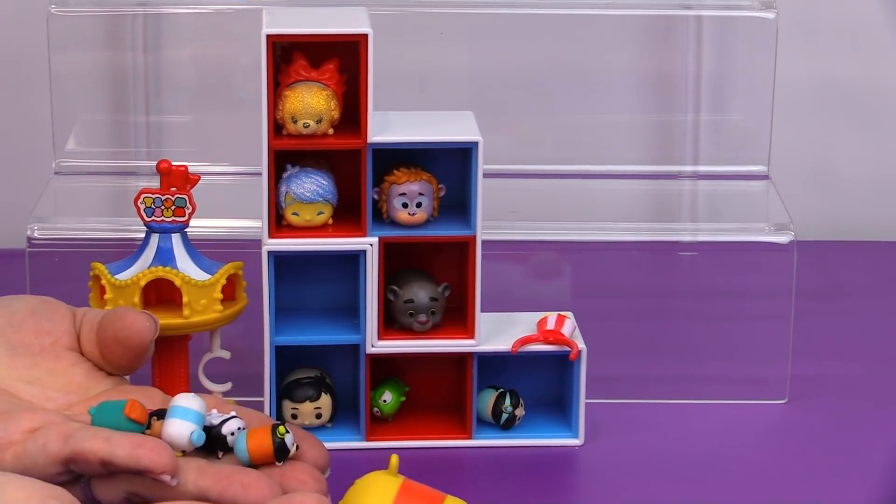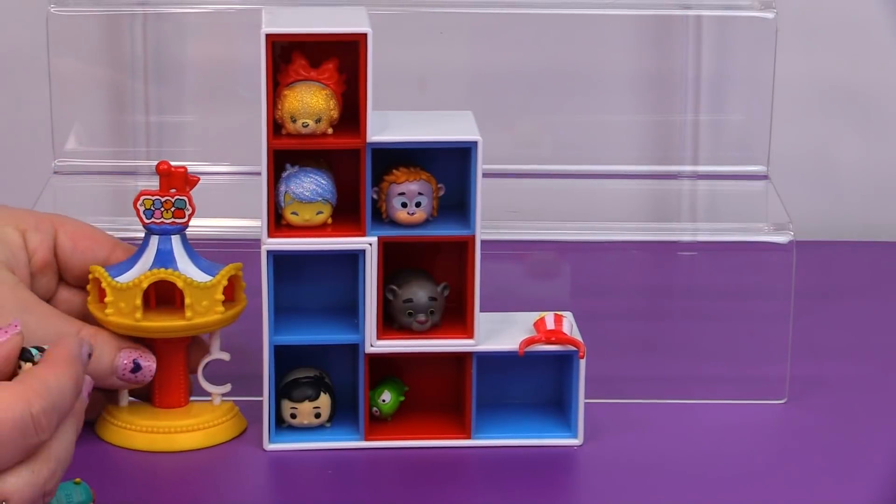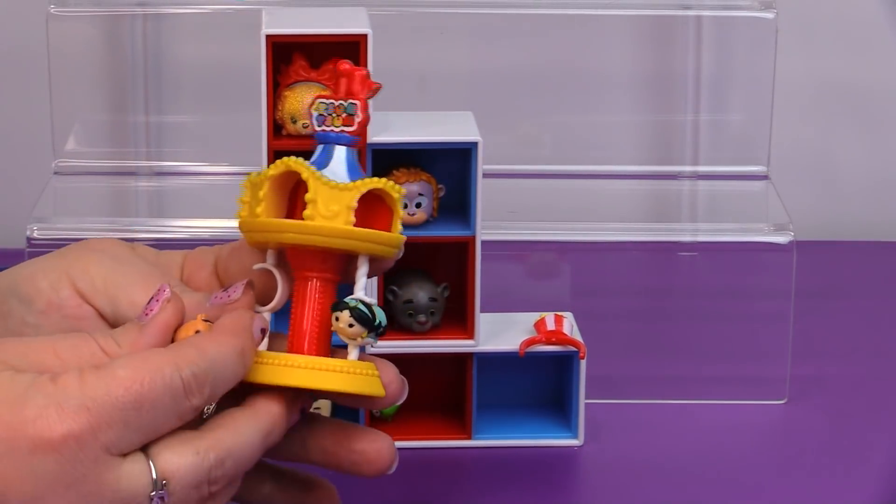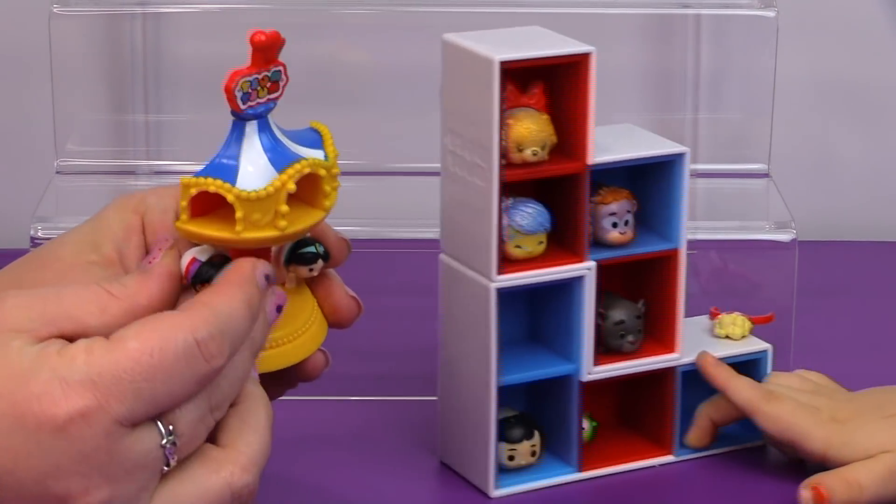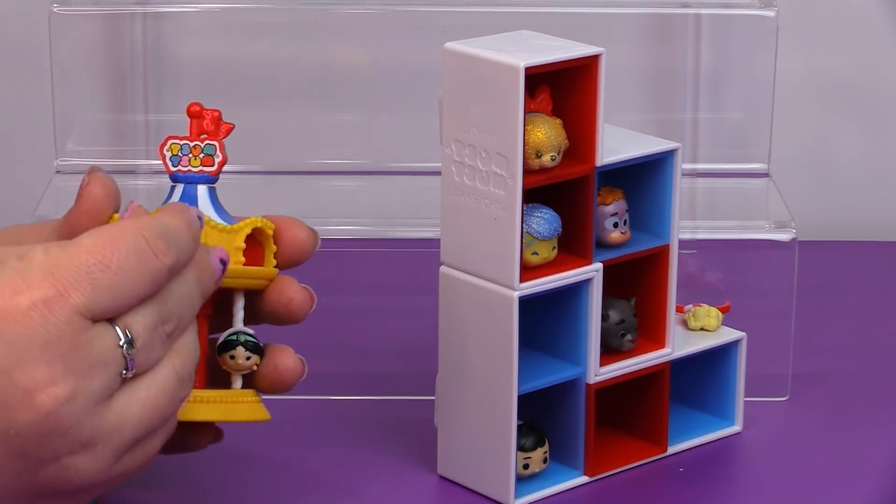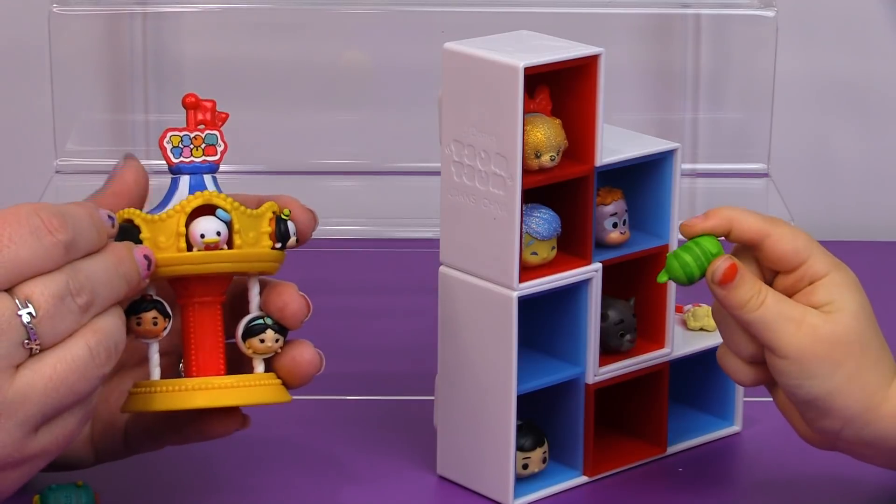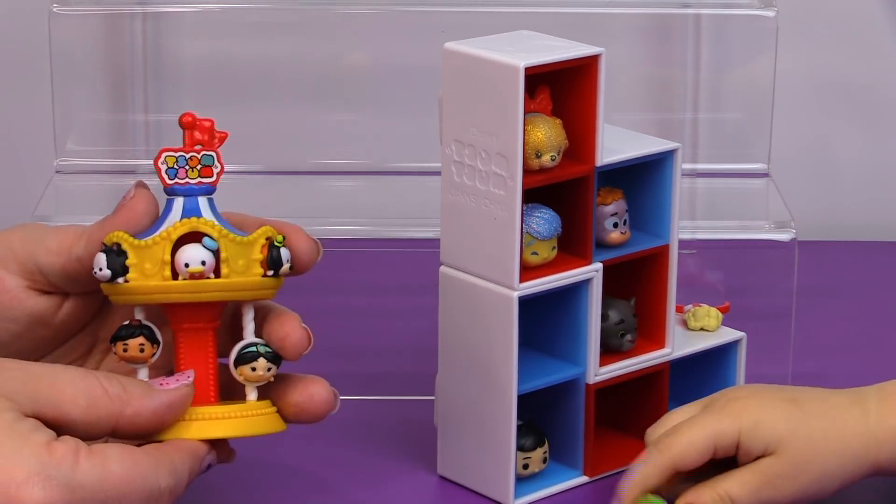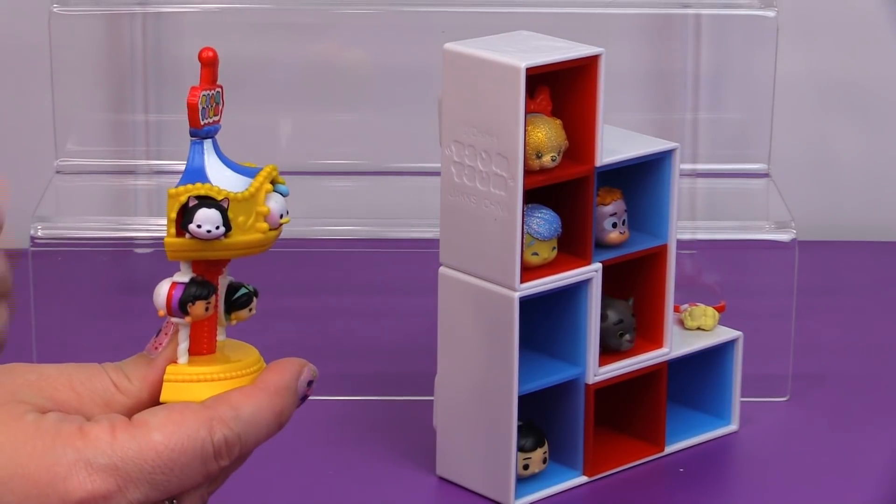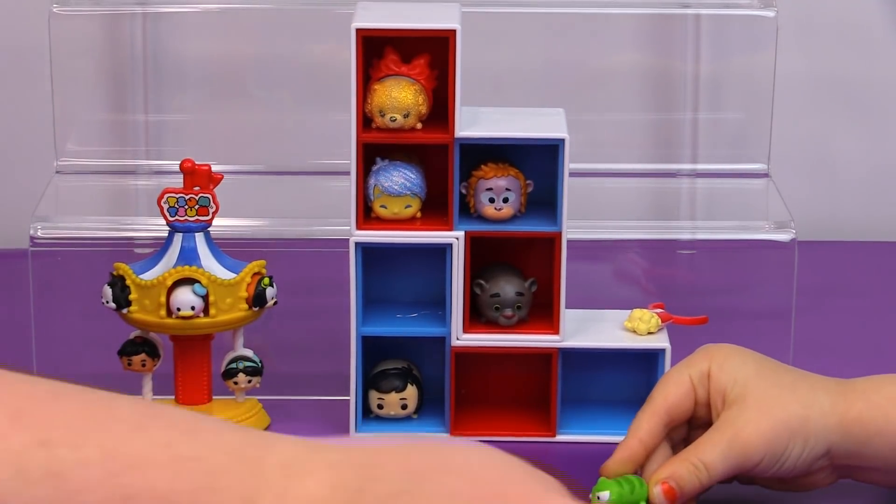I grabbed some of my other characters and I thought it would be fitting if Jasmine was riding in this carousel with Aladdin. So I grabbed Aladdin. So they're both in there. And then you can have these guys sitting up top. So we'll put Donald and Goofy and Figaro up there in this carousel. Look. What do you think? Yeah.